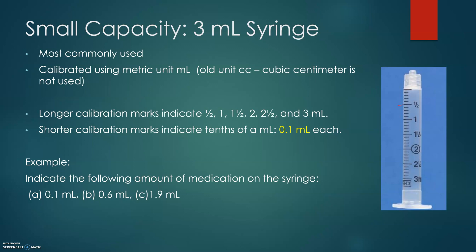This means we have a calibration of 1 tenth of a milliliter. For example, to indicate 0.1 milliliter: it is the first line after the long calibration mark. For 0.6 milliliter: since the calibration is in 1 tenth milliliter increments, we count 1, 2, 3, 4, 5, and 6 — so we mark 0.6 milliliter.